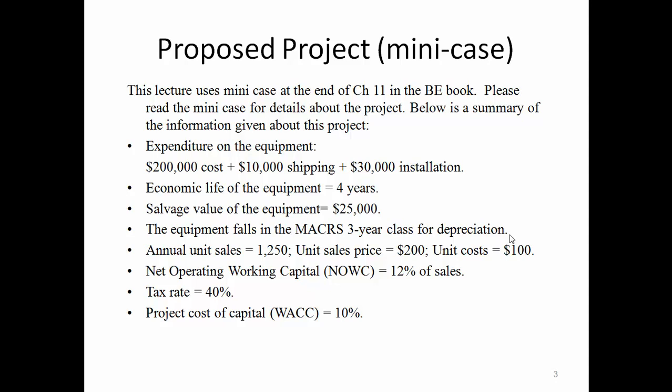With the project, each year we can sell 1,250 units of the product. The sell price per unit is $200, and the cost per unit is $100 — that is a variable cost of $100 per unit. Net operating working capital investment is 12% of sales each year. The tax rate is 40%, and the cost of capital is 10% for this project.